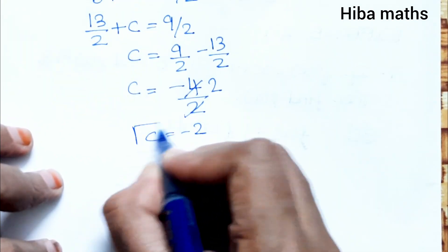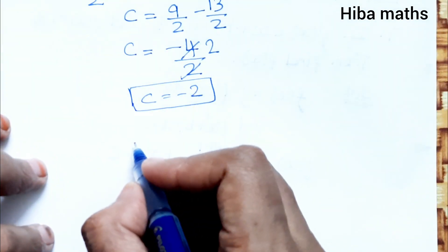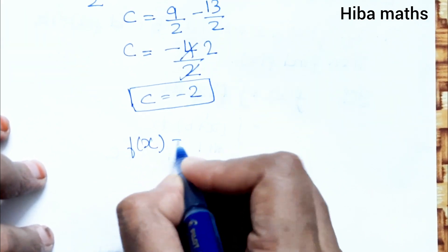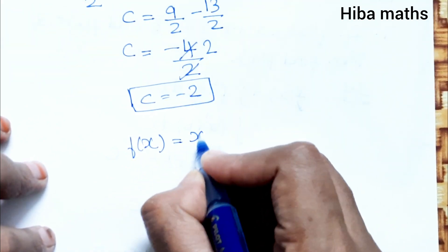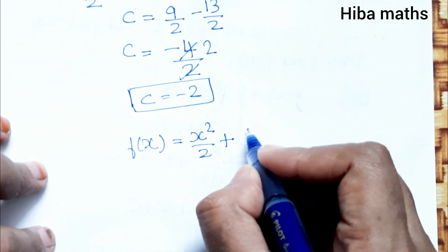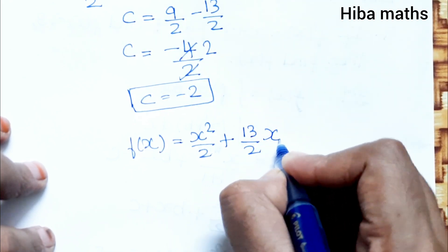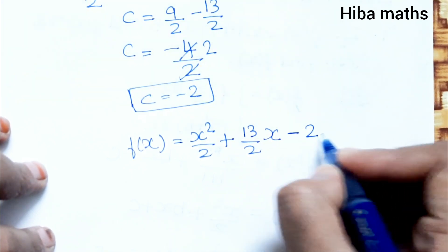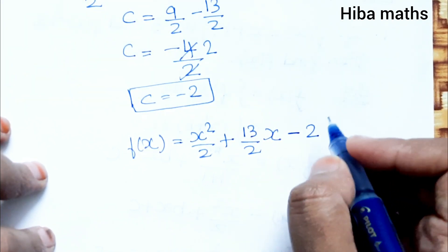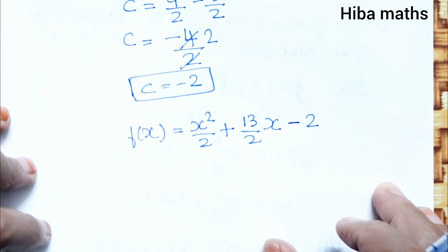Therefore f(x) equals x squared over 2 plus 13 over 2 times x minus 2. This is our final answer. Thank you so much for watching.